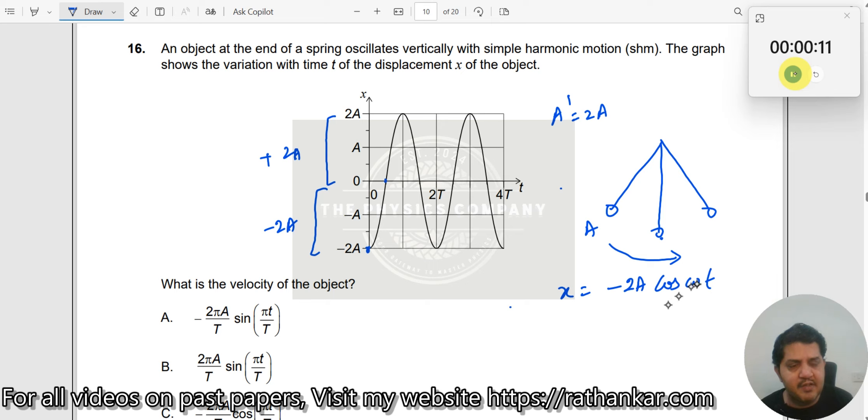How do I know it's cos omega t? Because if I put t equal to 0, I get x equal to minus 2a, right? So x equal to minus 2a. If I had taken, by mistake, if I had taken x equal to minus 2a sin omega t, then what would happen?